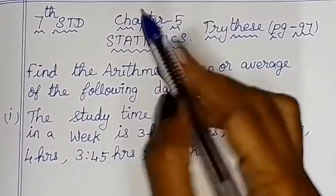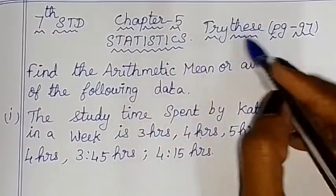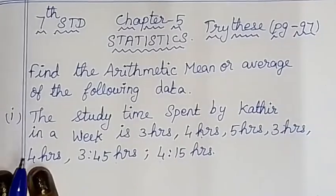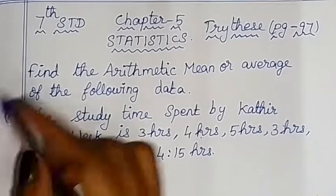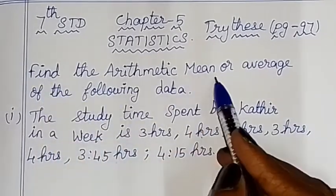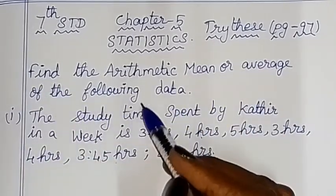Hello children. In chapter 5 statistics, page 97, let's see the following data. Find the arithmetic mean or average of the following data.